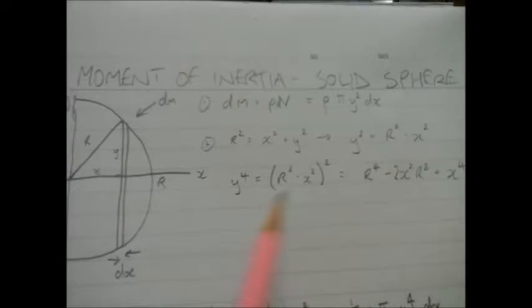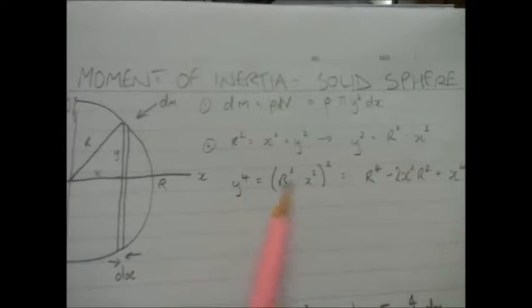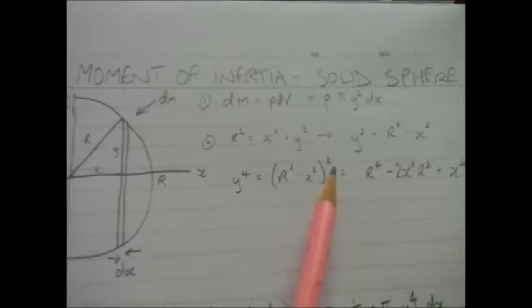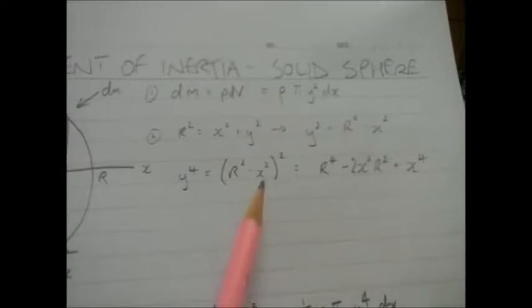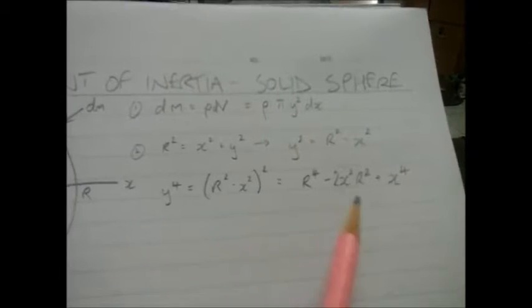Rearrange that so the subject is y² - I get this. Then I square both sides and you end up with y⁴ equals all this squared. Then I expand them brackets and I end up with that. Now this is y⁴ in terms of x.